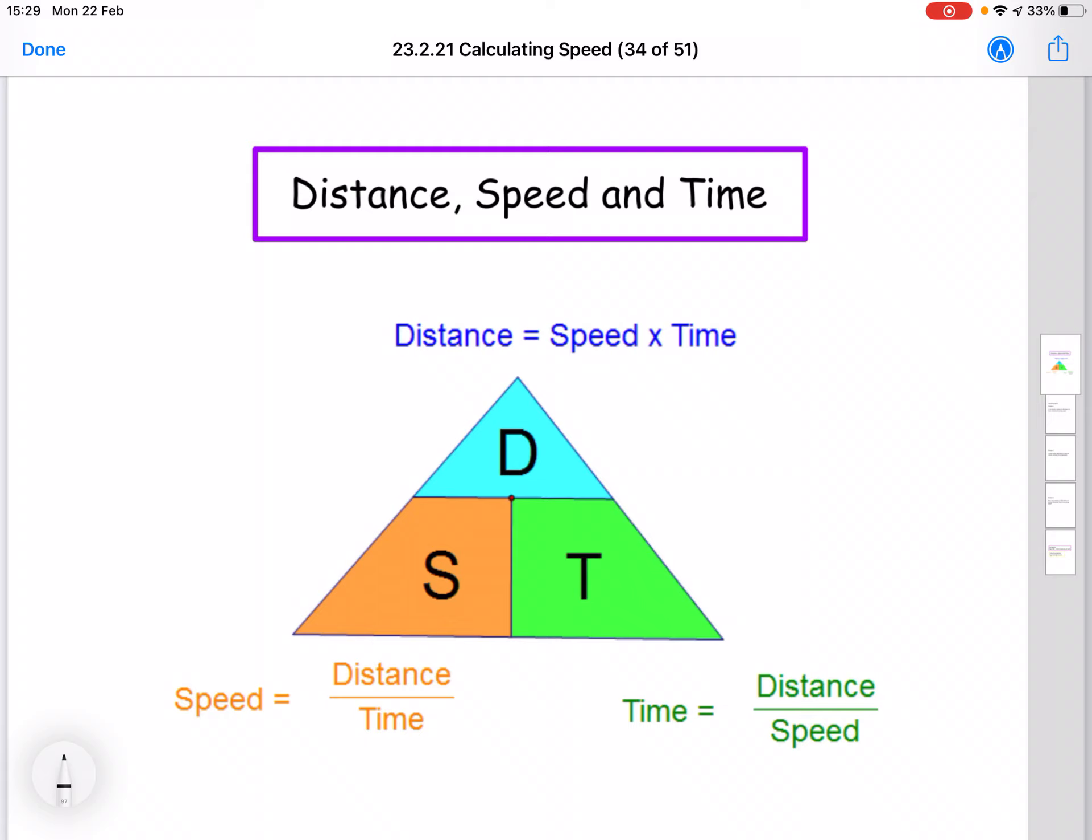So just a quick recap of the distance, speed, time triangle that we looked at yesterday. Here we have the triangle with the letters, so you've got D at the top and then S and then T. Remember that you fill it in sort of alphabetically from the top and then down, left across to right. So D at the top and then S and then T.